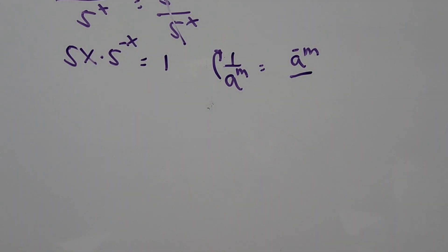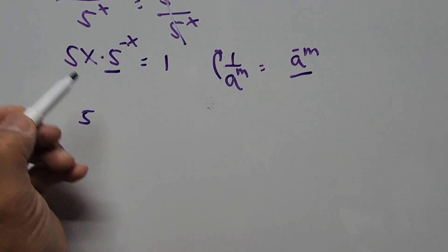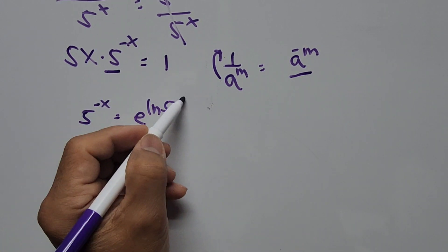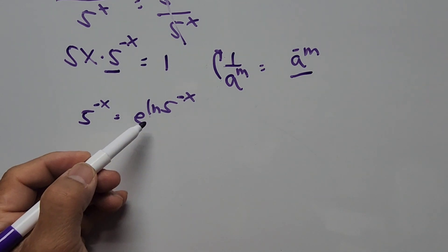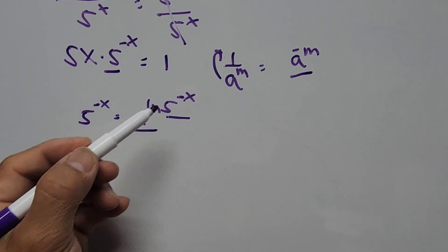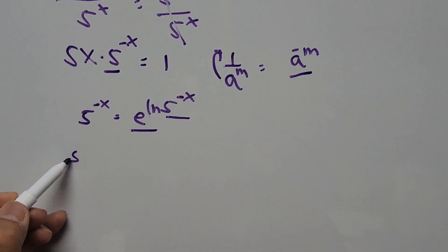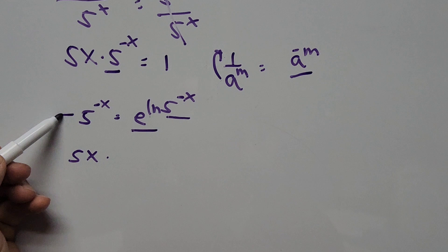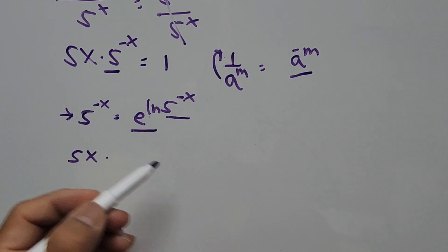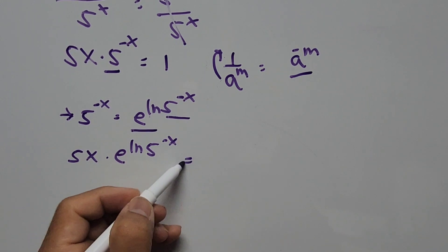Next we'll be expressing 5 to the negative x. This can be written as 5 to the power of negative x equals e to the power of ln of 5 to the power of negative x, since e to the power of ln cancels and this becomes just 5 to the power of negative x. So back to our equation: 5 times x times e to the power of ln 5 times negative x equals 1.